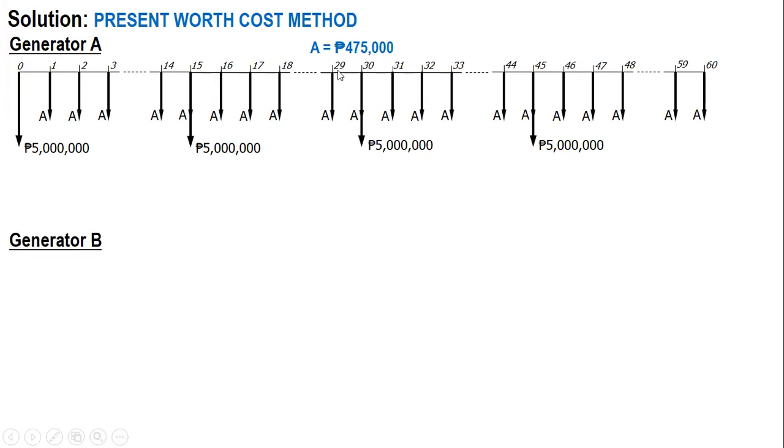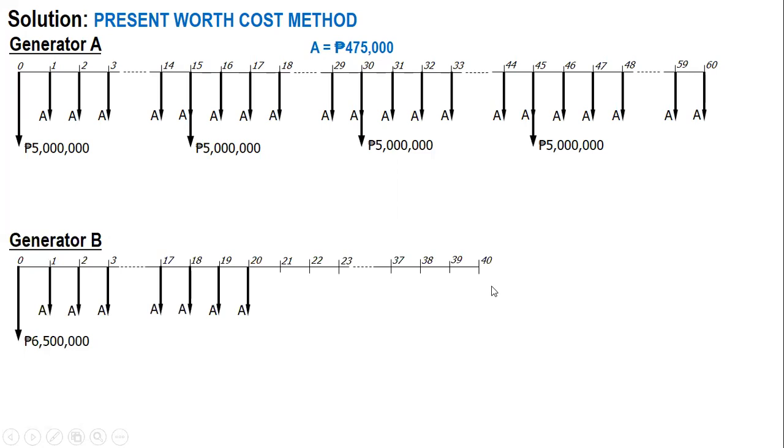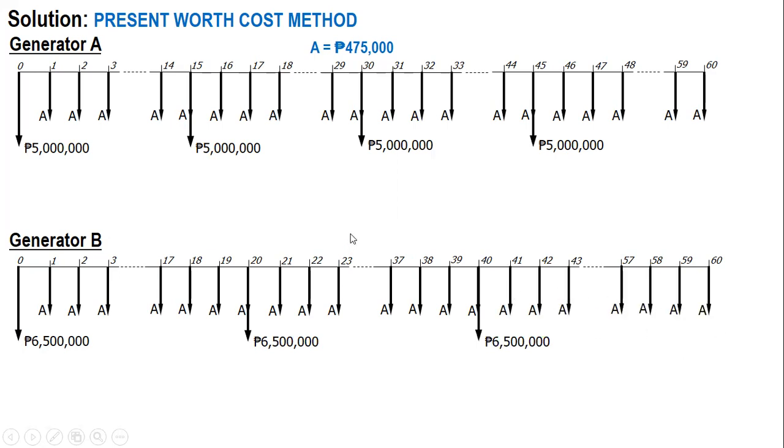Now for generator B, the useful life is 20 years. And the initial investment is 6.5 million. And then annuity for operating and maintenance cost for 20 years. And the useful life is 20, so after 20 years we buy again for another 20 years until 40. 6.5 million and then same operating and maintenance cost. And then after 40 years we buy again for another 20 years to match the study period of 60. So 6.5 million and then annuity. And our annual operating and maintenance cost is 400,000.